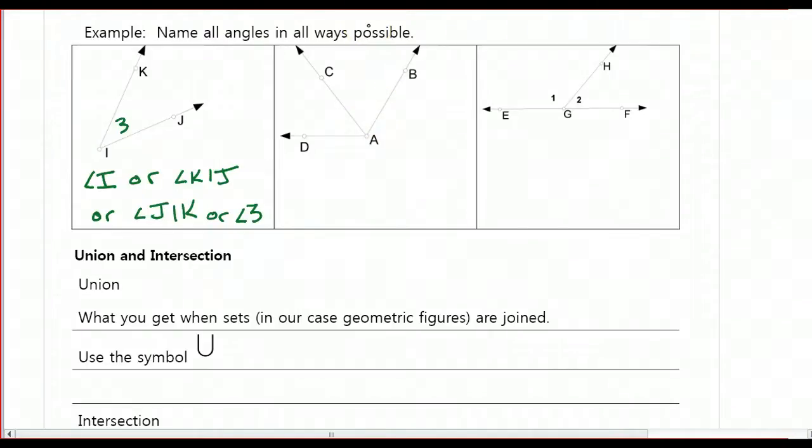In the second picture here, we actually have three different angles. We have this smaller angle to the left, this other small angle to the right, and then if we put those two together, we get a larger angle. Now, since our vertex of all three angles is A, we can't say angle A because it would lead to confusion. Our convention is if there's more than one angle at the vertex, then you have to use three letters or a number inside the vertex.